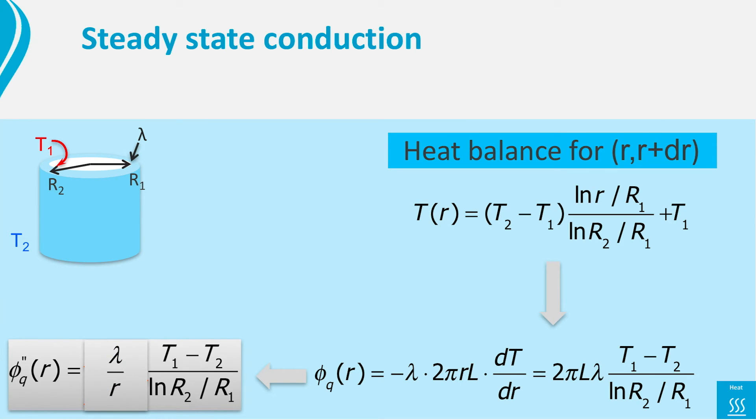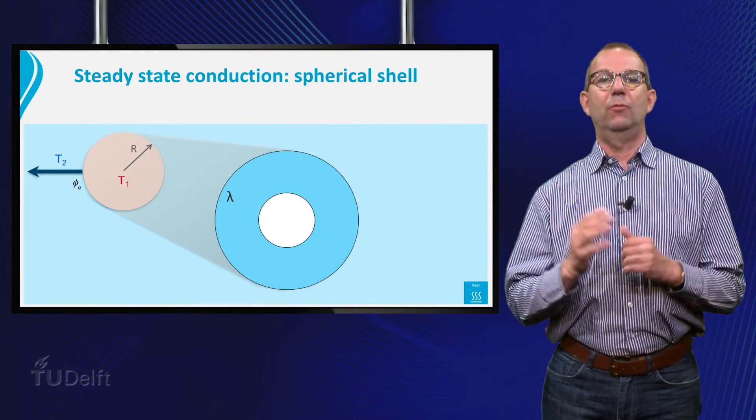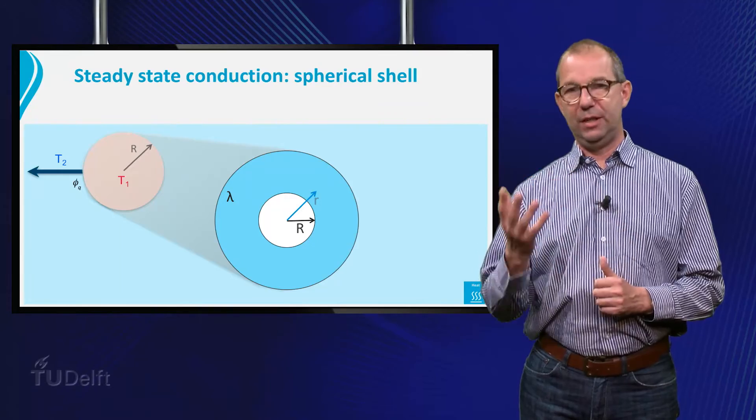Finally, now that we have the heat flow, we can also compute h, the heat transfer coefficient. We leave that as a small exercise for you to do. Ok, we have done the strip and the cylindrical shell. What remains is the sphere.